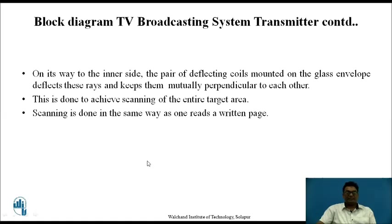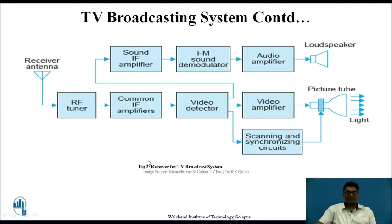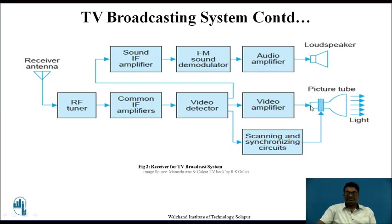This is all about the TV transmitting system. Now we are going to see the TV receiving system. Here, as you can see, there are different blocks: RF tuner, common IF amplifier, video detector, scanning and synchronizing circuits, video amplifier, audio amplifier, FM sound modulator and sound IF amplifier. There is also a receiving antenna, a loudspeaker, and a picture tube. The loudspeaker is generally used for reproduction of sound, and the picture tube is used for reproduction of the video signals.